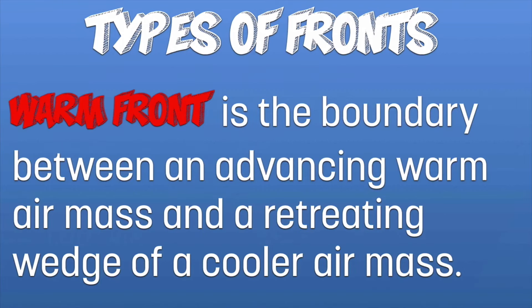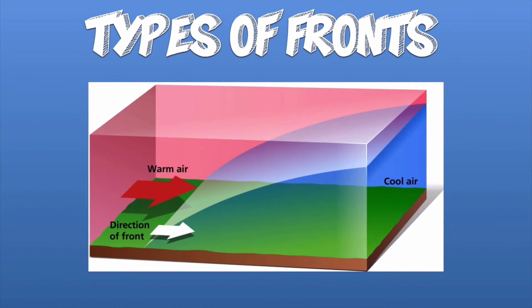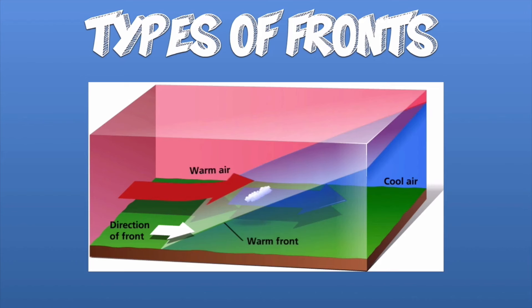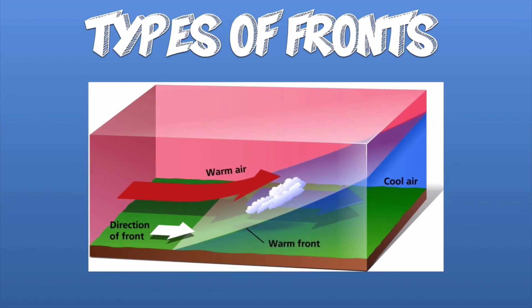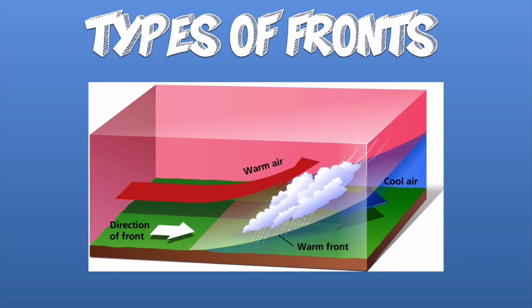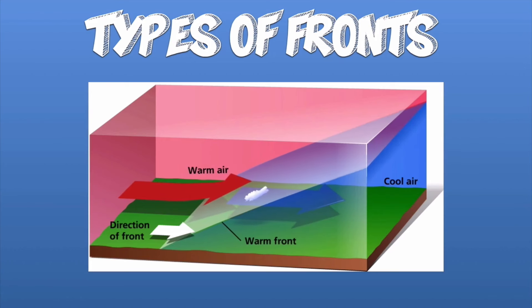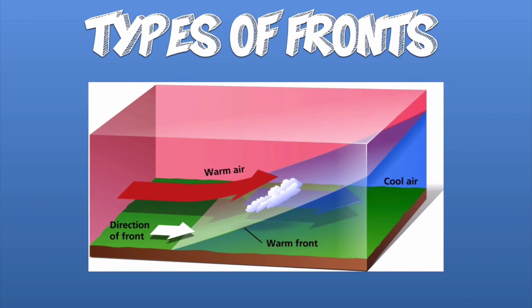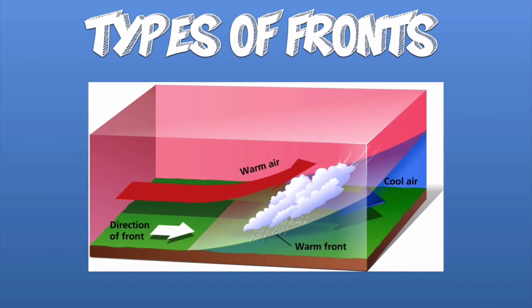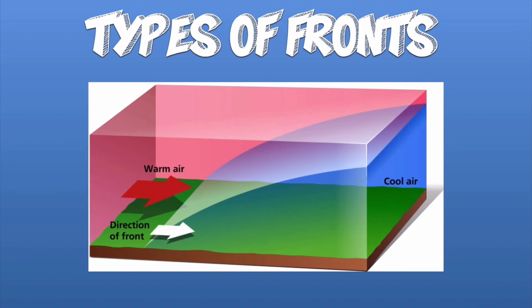The next type of front is a warm front. Warm fronts are the boundary between an advancing warm air mass and a retreating wedge of cooler air. We have the same interaction, only reversed — instead of warm air being in the area first, cold air is there first, and here comes the warm air moving in very slowly and being forced to rise. As it rises, it expands, condenses, reaches the dew point, condensation forms clouds, and clouds lead to precipitation. Notice how long this takes — warm fronts take a long time to develop into precipitation. It's not as immediate or quick a change as a cold front.